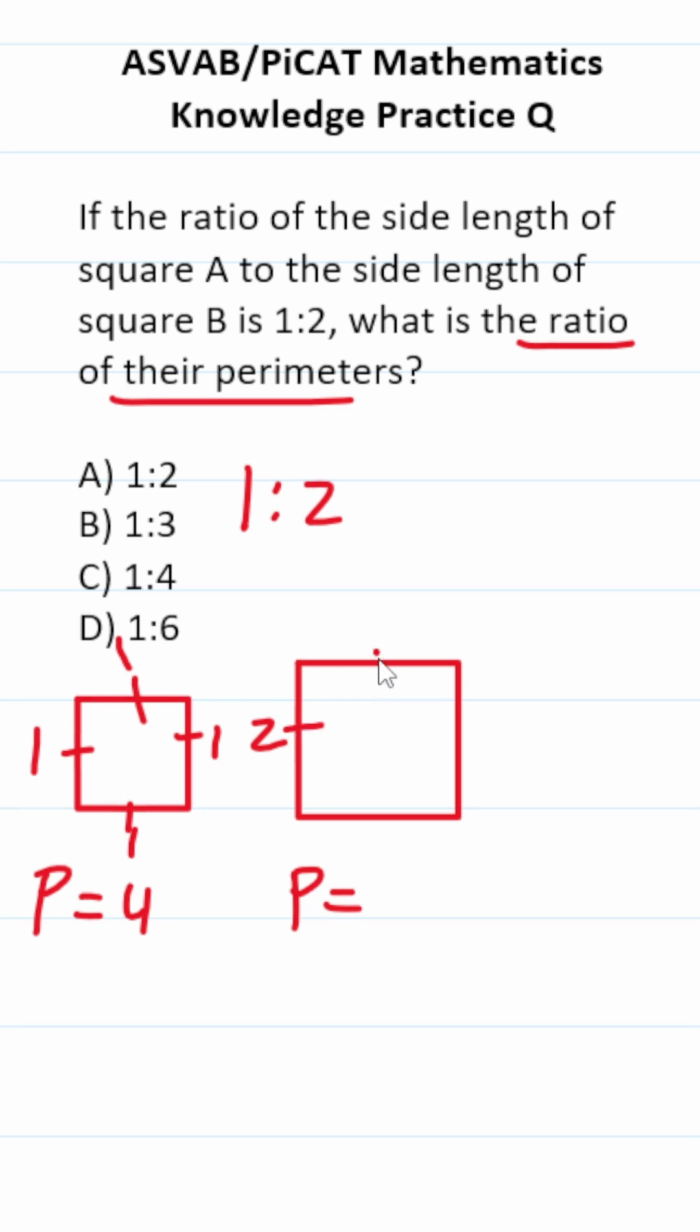Again, we know the side length is 2. So all these other side lengths are 2. How are we going to find the perimeter of this square? Just add up all of its sides. That's going to be 2, 4, 6, 8.